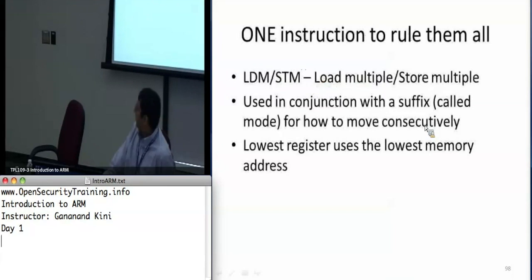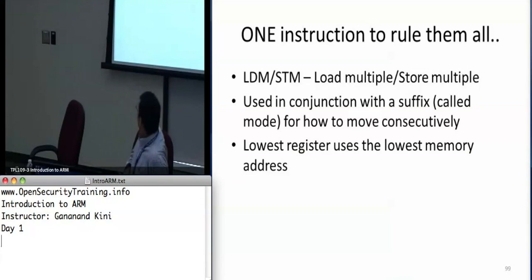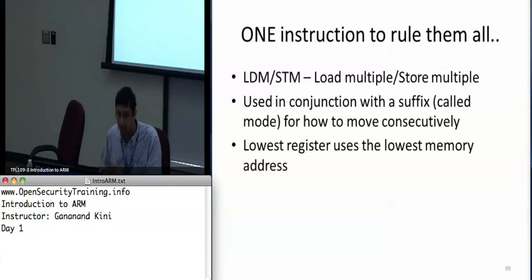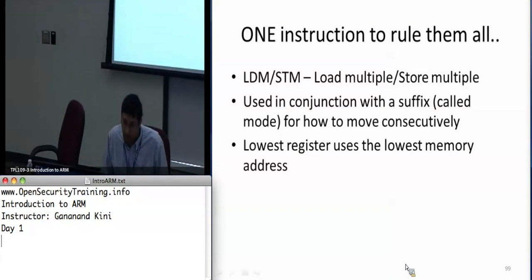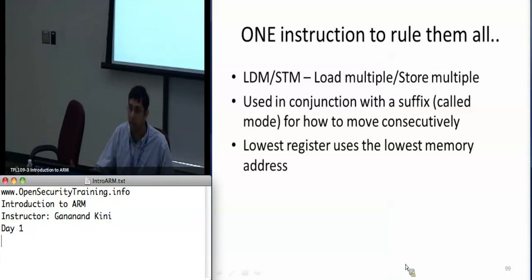We'll see this being used in something called the interrupt vector table. When you wire your interrupts to specify which code to run, you'll see a bunch of instructions like LDR PC, [PC, #100]. This is very important — it's using LDR PC as an indirect jump through a table of addresses.